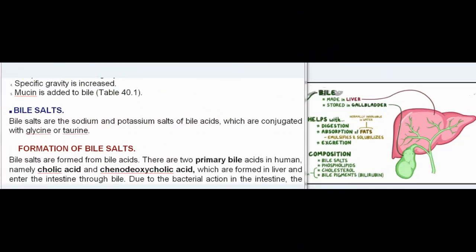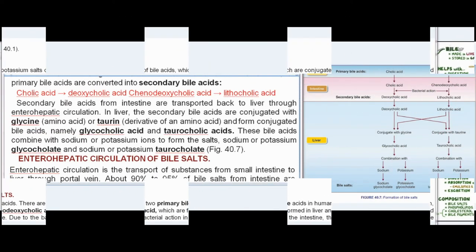Bile salts are the sodium and potassium salts of bile acids, which are conjugated with glycine or taurine. Bile salts are formed from bile acids. There are two primary bile acids in humans: cholic acid and chenodeoxycholic acid, which are formed in the liver and enter the intestine through bile.